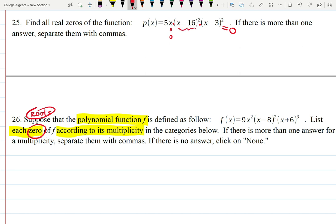Because 5x can make everything zero if x is zero, (x-16)² can make everything zero if x is 16, and (x-3)² can make everything zero if x is 3. Basically, what I'm doing here is literally solving three equations: 5x equals zero, (x-16)² equals zero, and (x-3)² equals zero.